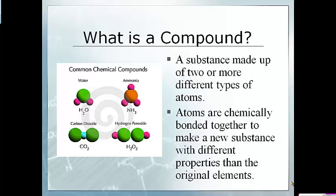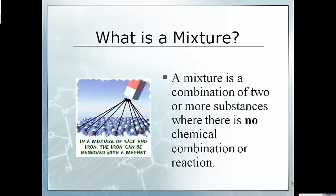But when you chemically combine them together, they create a brand new substance — water. That brand new substance has completely different properties: it's a liquid, it's definitely not flammable, and it's drinkable. When substances chemically bond and make something new with brand new properties completely different from the originals, we call that a compound. We're going to talk more about compounds later, but today we're going to talk about what is a mixture, and specifically a homogeneous mixture.